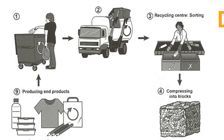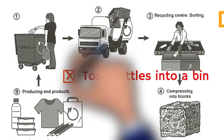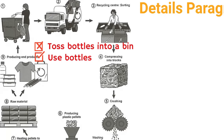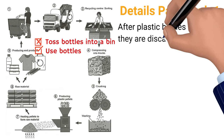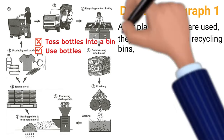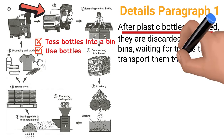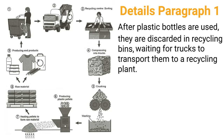Now the first step. Because we need to have a complete cycle, the first step really shouldn't be to toss bottles into a bin. In order to form a cycle, we should start the process with using plastic bottles and finish with reusing them. So we can say: 'After plastic bottles are used, they are discarded in recycling bins.' If you don't have this part, at least describe those bottles as used bottles. Now let's add the second step — transportation: 'waiting for trucks to transport them to a recycling center', or you can use 'recycling plant' to avoid copying the original wording.